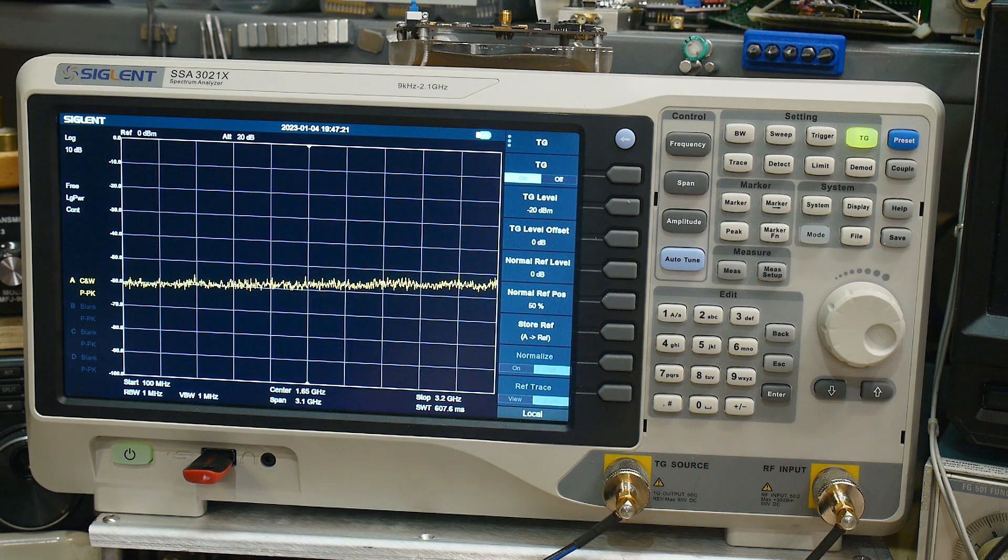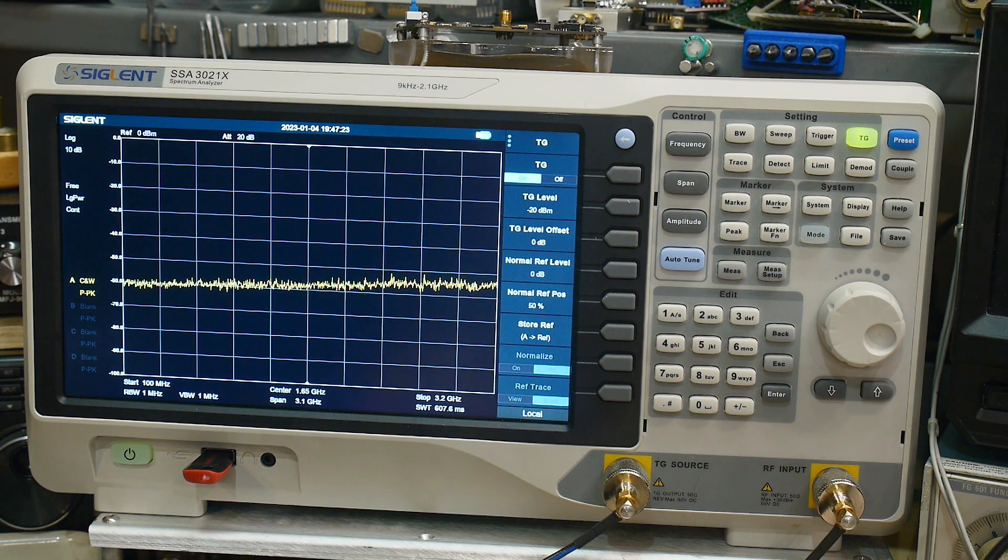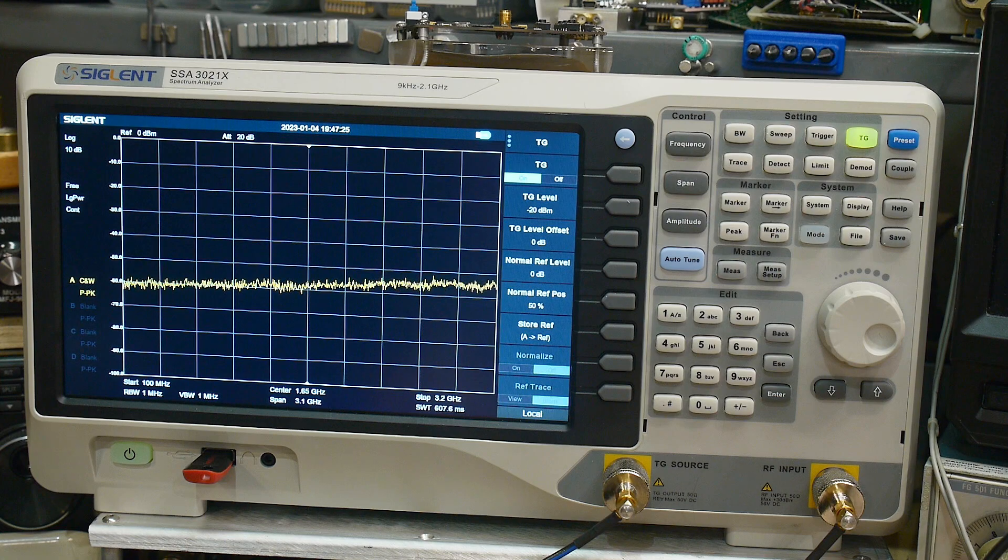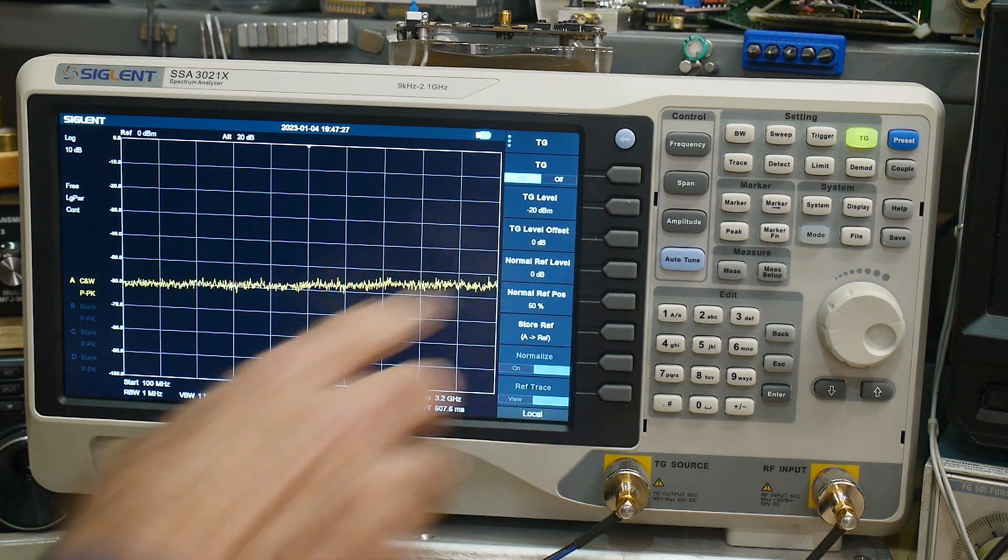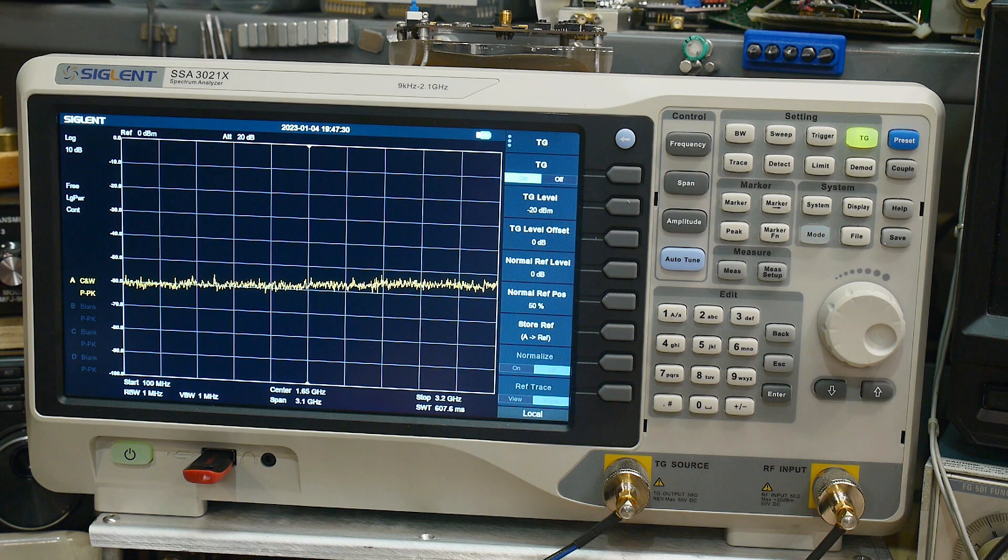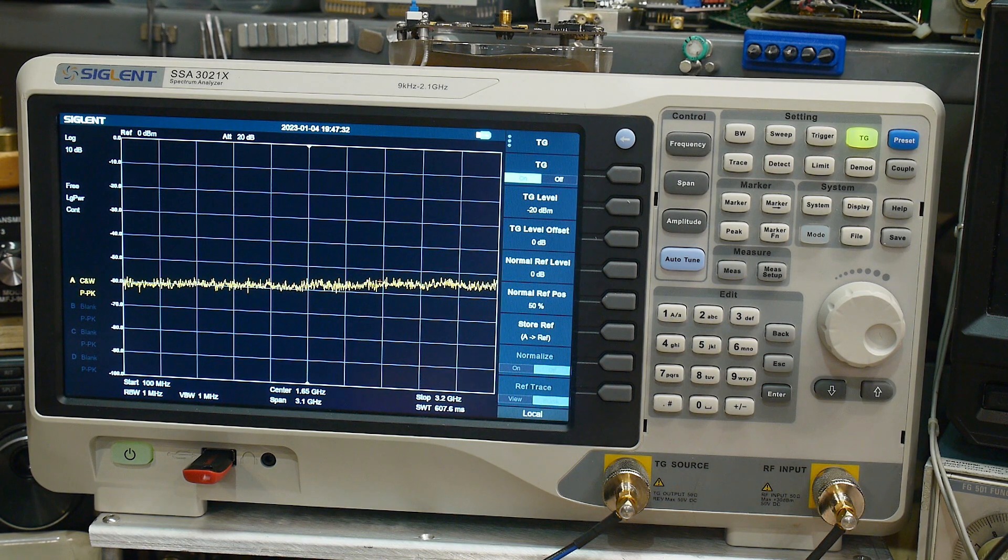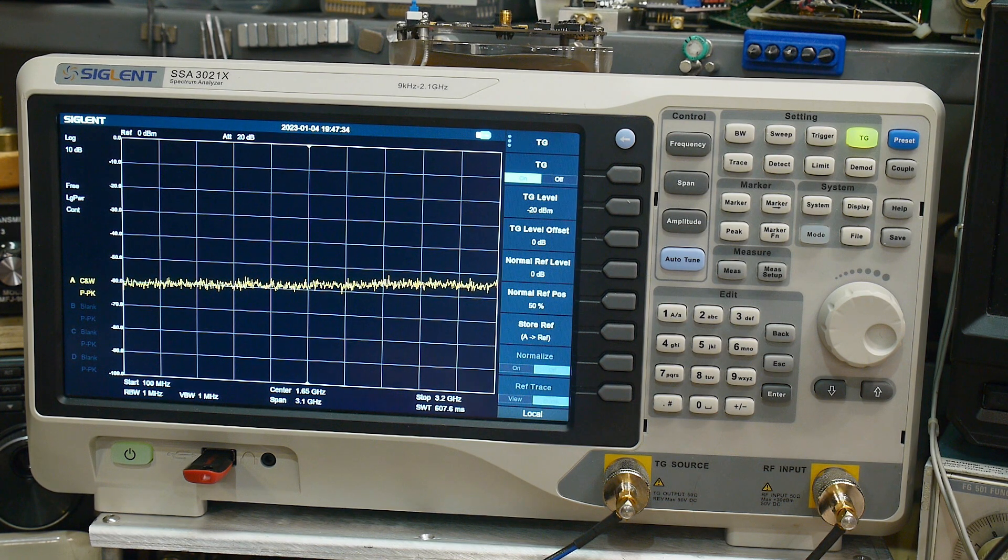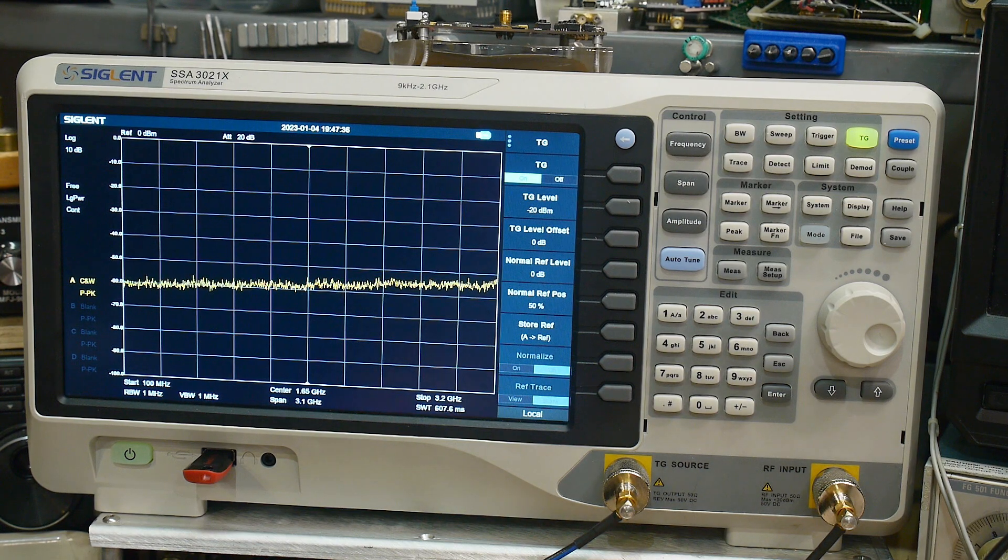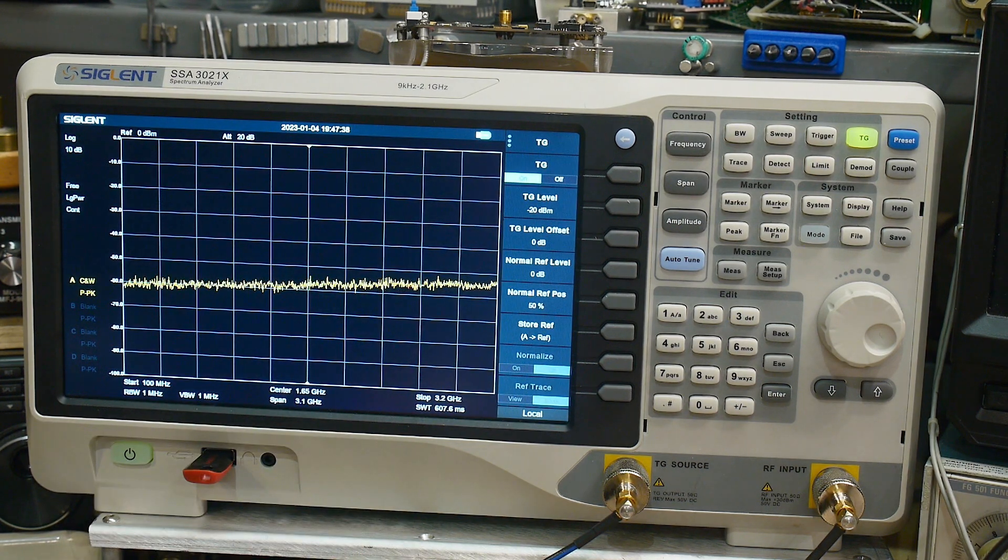Now we can start thinking about which level we want. That's the power going into the amplifier and our amplifier is a 10 dB amplifier. So if we input minus 20 dBm, we're going to output minus 10 dBm. That sounds reasonable, so we're going to leave it there.